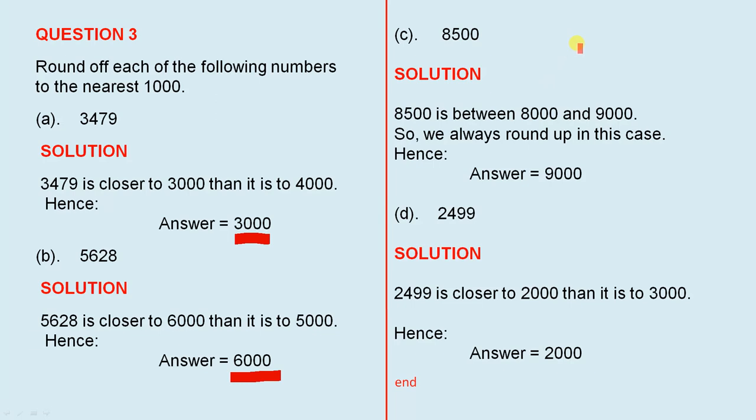8,500. 8,500 is between 8,000 and 9,000. When it's exactly in the middle, we round up, we always round up. So the rounding up gives us 9,000.